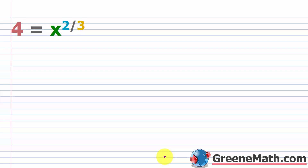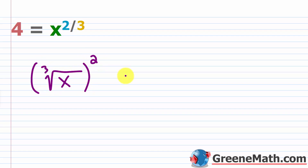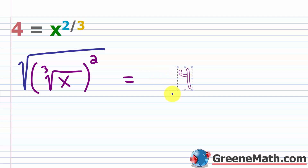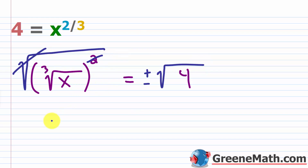Let's wrap up with one that seems easy but trips up a lot of students. We have four equals x to the power of two thirds. There's no way to get like bases here since one side is four and the other is x. Think about this using radical notation: x to the two thirds is the cube root of x, squared, set equal to four. To clear the square, take the square root of both sides — and on the right, remember to write plus or minus the square root of four. The square and square root cancel, leaving the cube root of x equals plus or minus two.